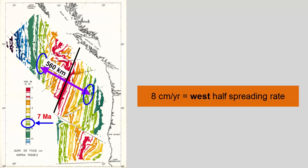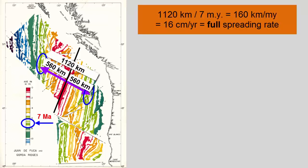If we want to know the full spreading rate and how fast both sides are moving away from each other, the distance has doubled, and we get 16 centimeters per year.